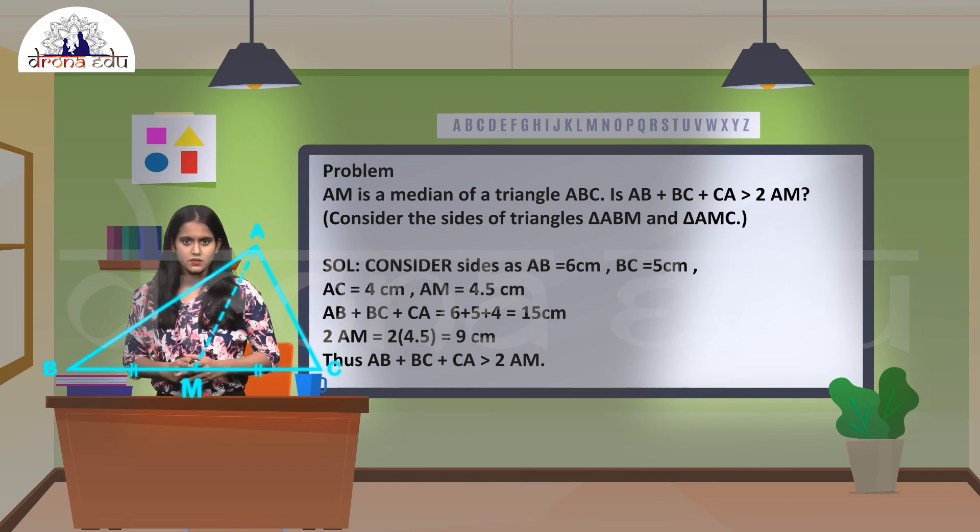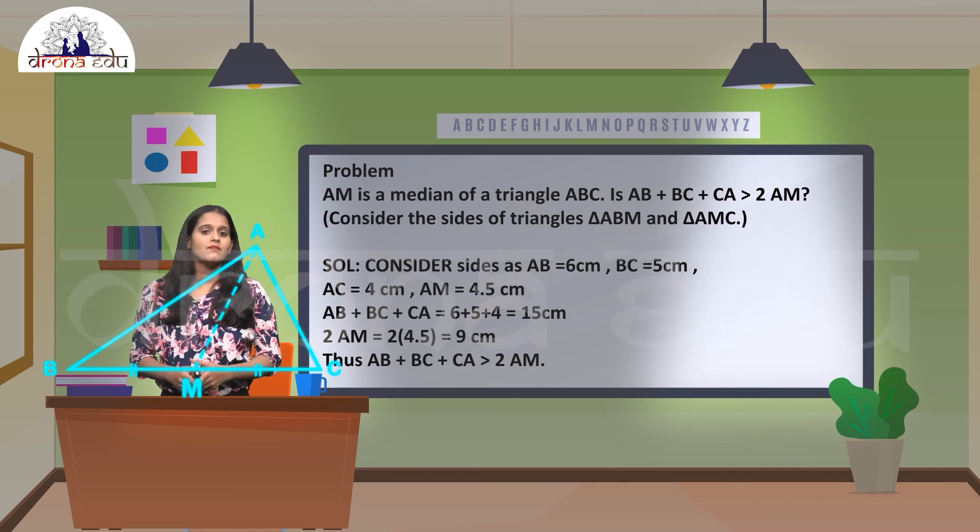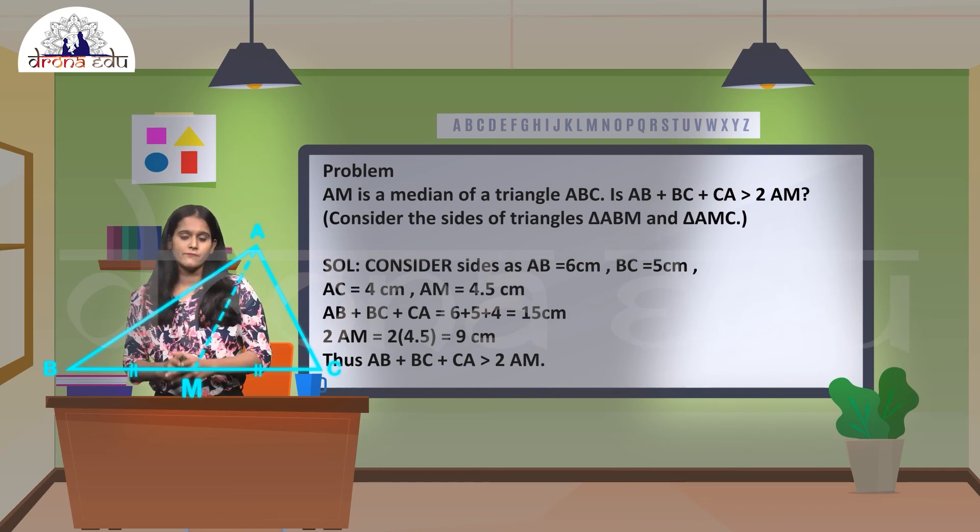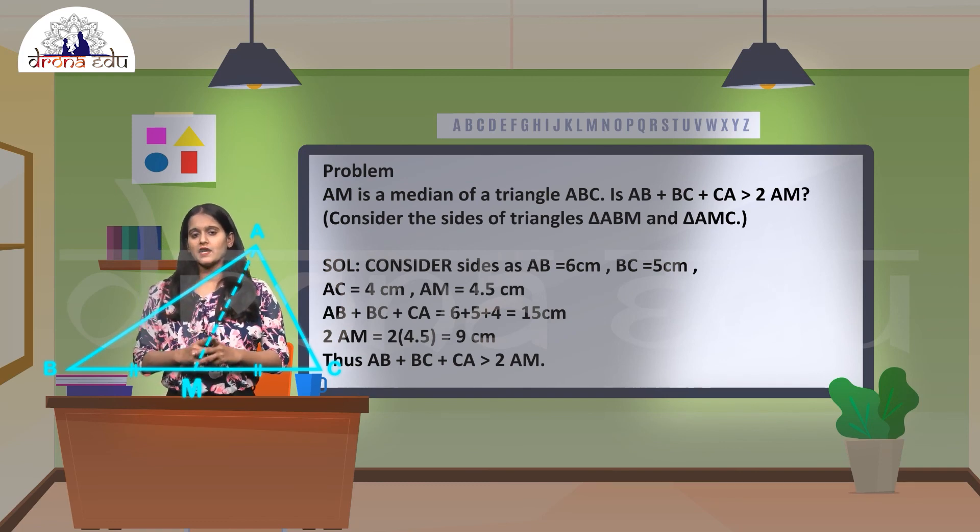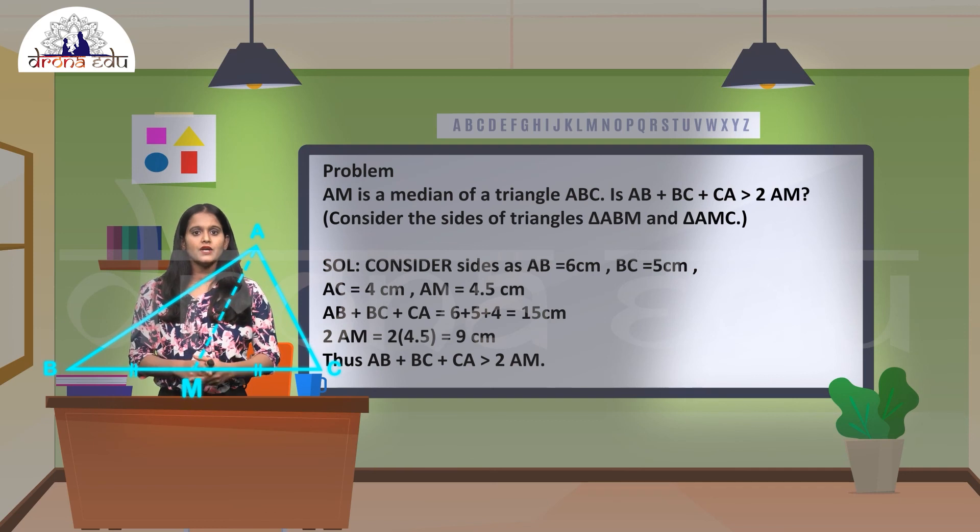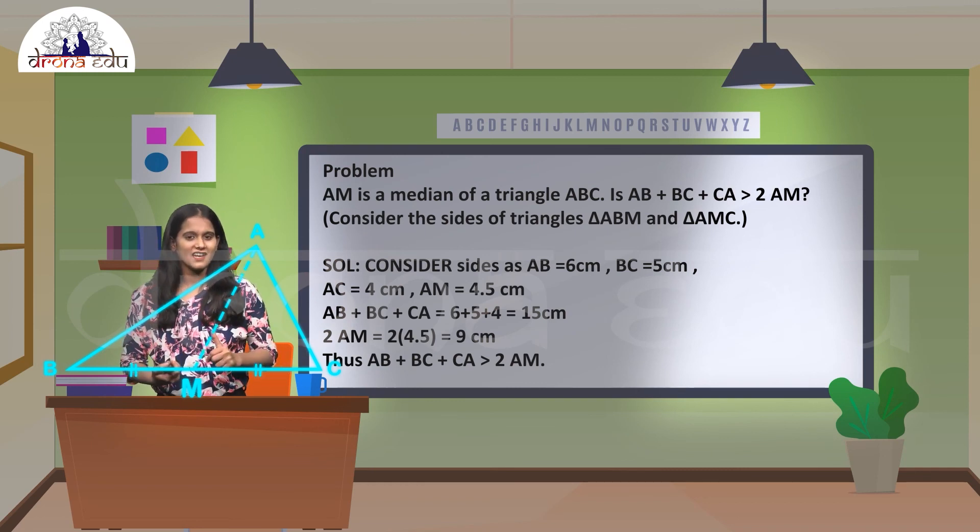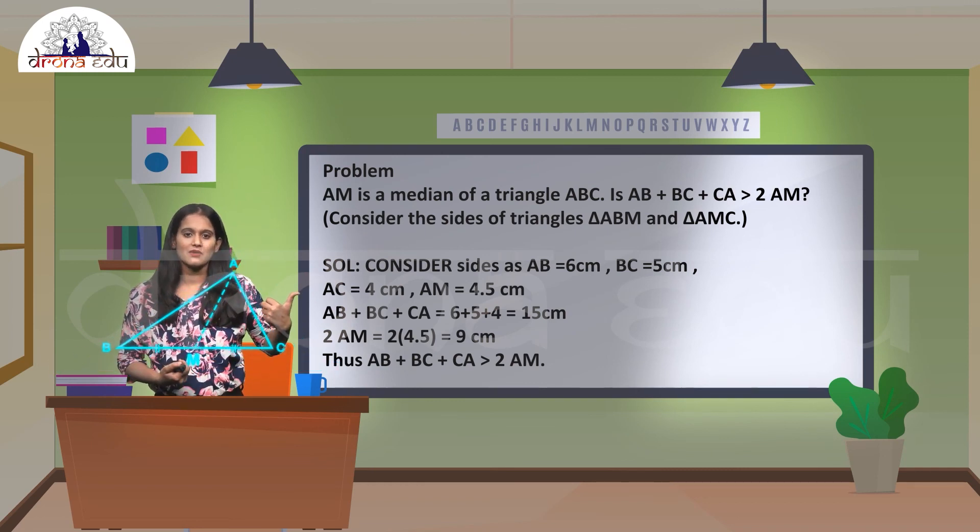And AM is 4.5 cm. So if I add AB + BC + CA, which is 6 + 5 + 4, I'll get 15 cm. If I multiply 2 with AM, so 2 × 4.5 equals 9 cm. If you observe, 15 is greater than 9. Thus the equation is matching.